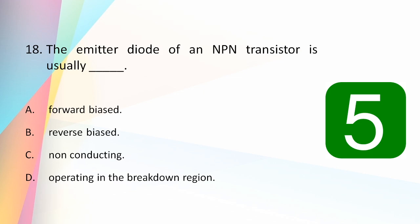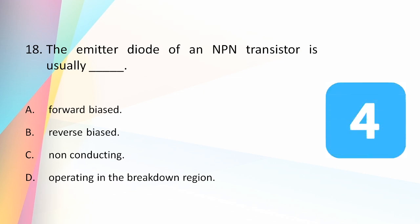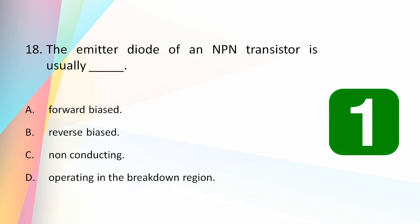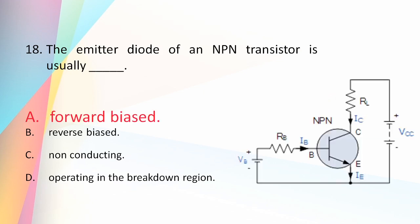The emitter diode of an NPN transistor is usually: forward biased, reverse biased, non-conducting, or operating in the breakdown region? The answer is forward biased. In typical operation, the base-emitter junction is forward biased, meaning the P-side of the junction is connected to a positive potential and the N-side to a negative potential. Hence the base junction acts as a diode in forward bias, which is why it is called the emitter diode.